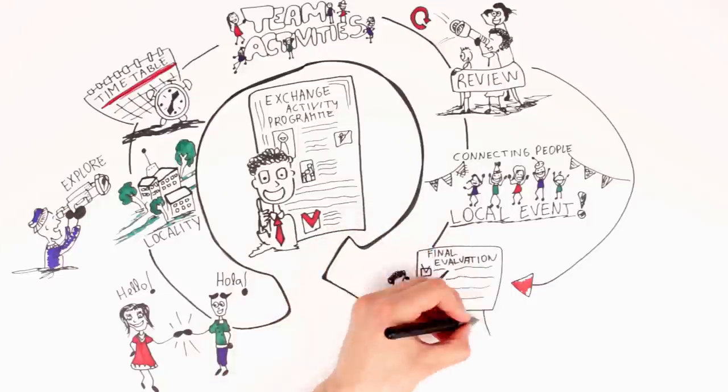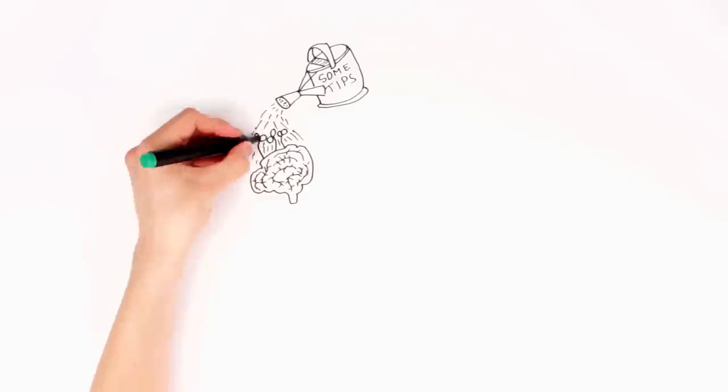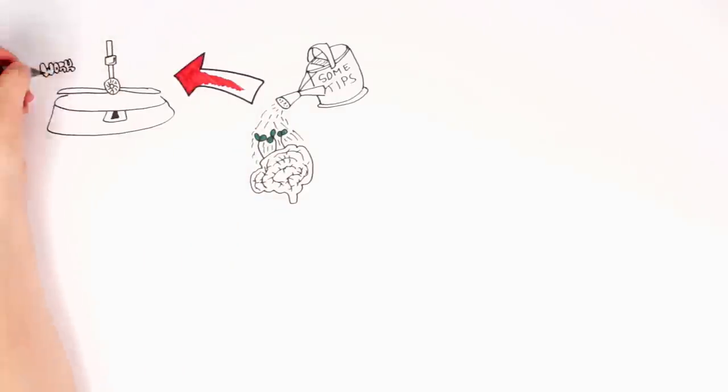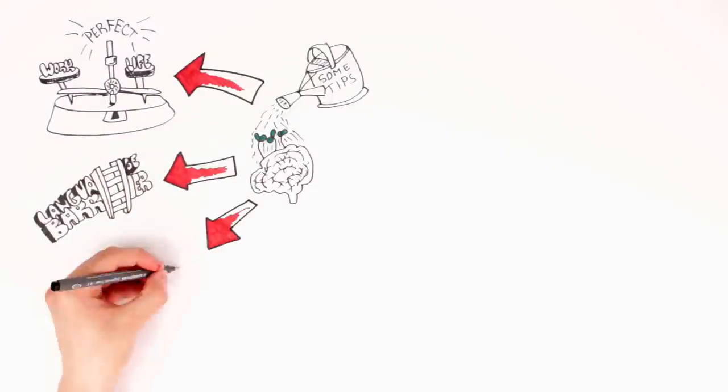It is essential to schedule a final evaluation meeting with all partners at the end of the exchange program. Some tips to build a good youth exchange program: organize a well-balanced program, divide time between work, rest, and play. Be aware of language limitations and ensure that communication is not hindered by language barriers.